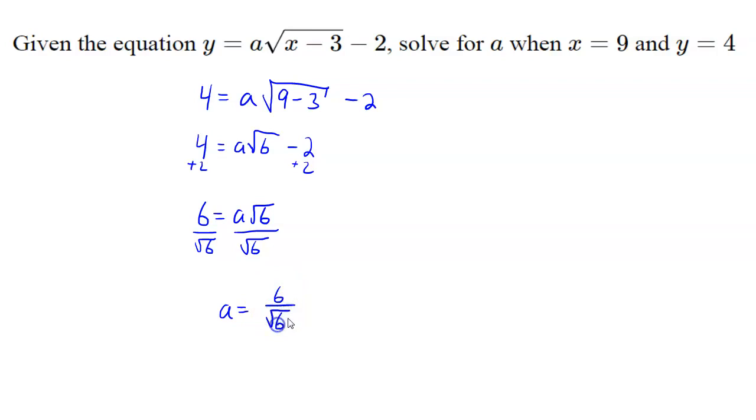And for our purposes, this is a fine answer. Some people might want you to what's called rationalize the denominator, but we're just going to stop here and say, there we go. So a is 6 over root 6.